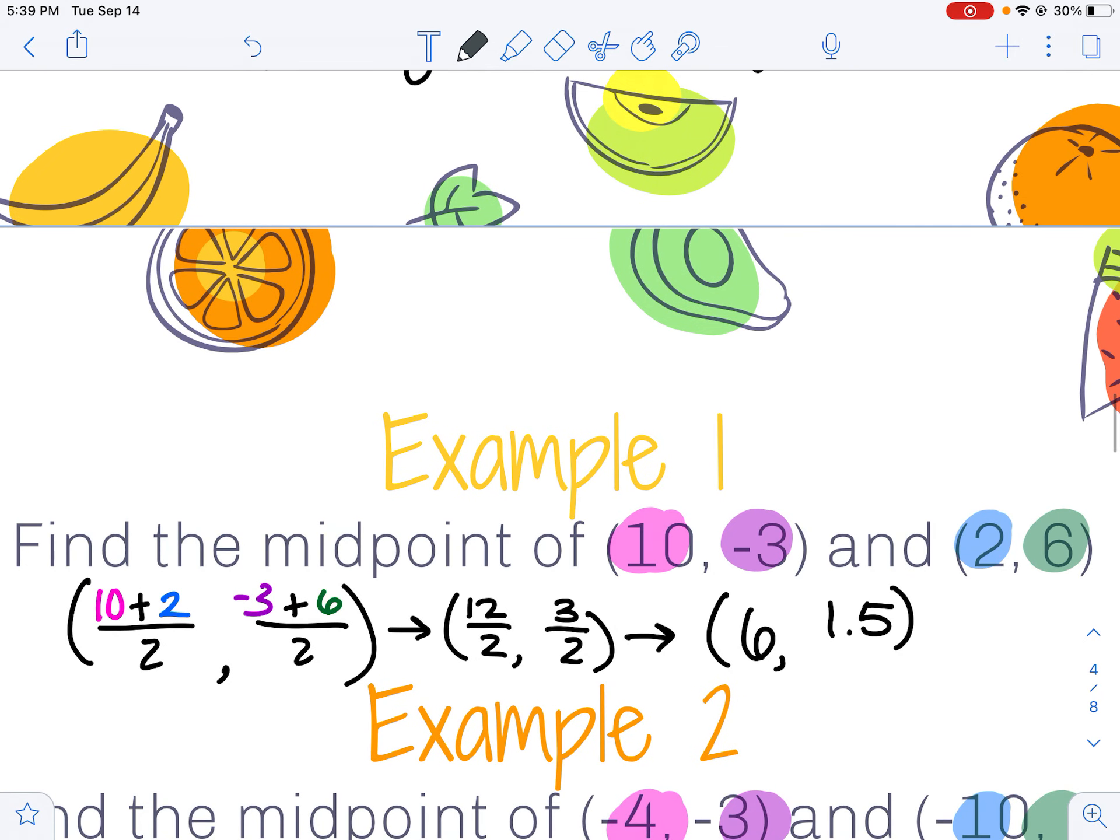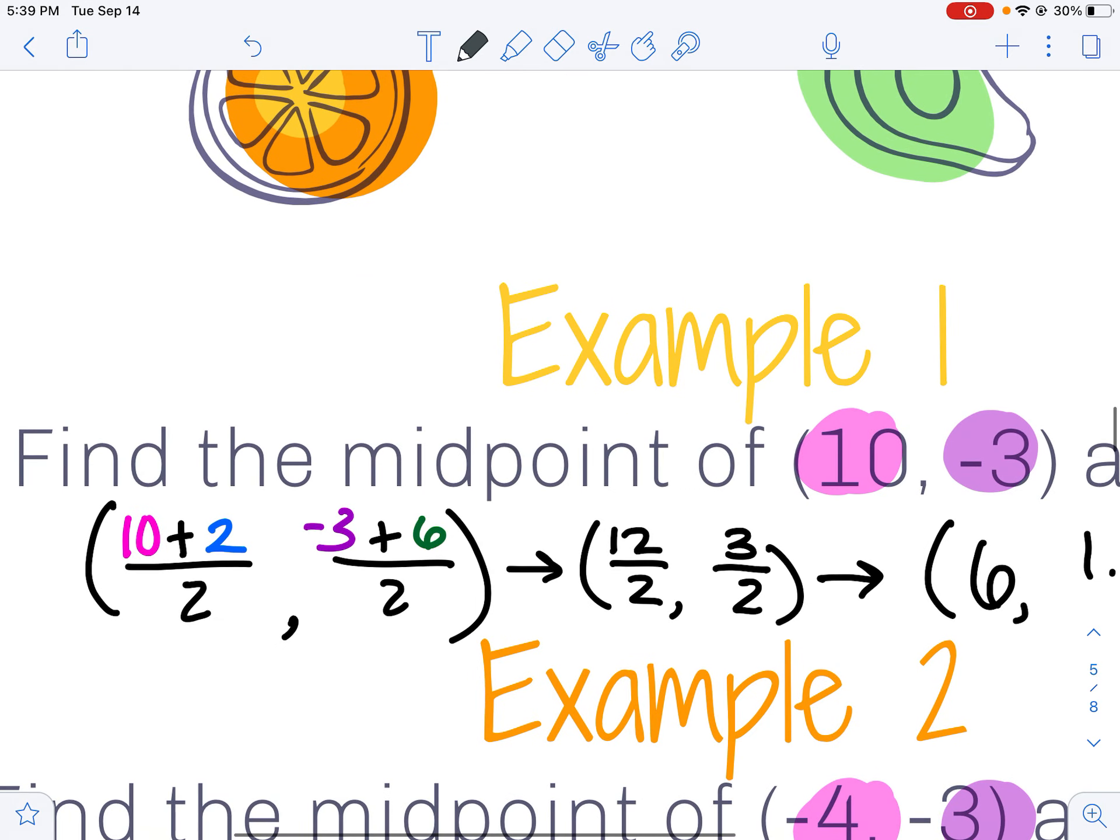So we're going to practice a few of them. I'm finding the midpoint of (10, -3) and (2, 6). I'm taking both my x values, so 10 and 2, add them and divide by 2. Do the same thing with your y's, negative 3 plus 6 divided by 2. 10 plus 2 is 12, cut in half gives me 6.